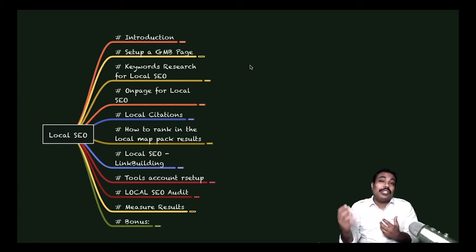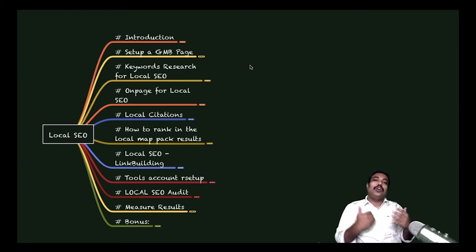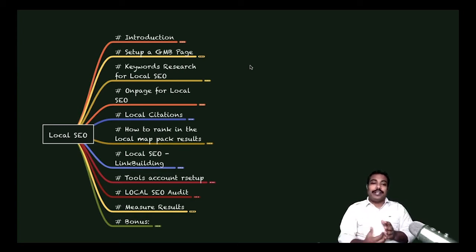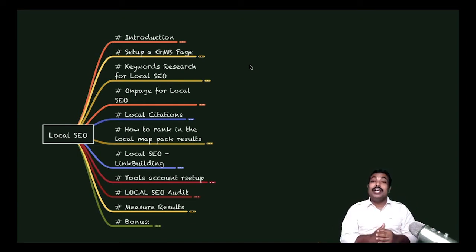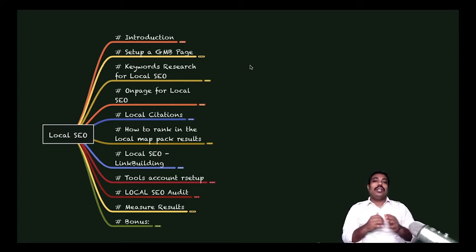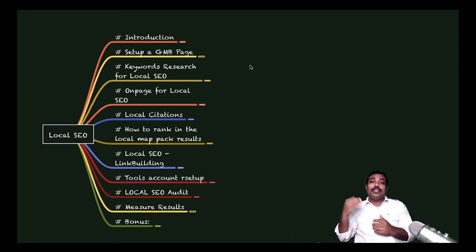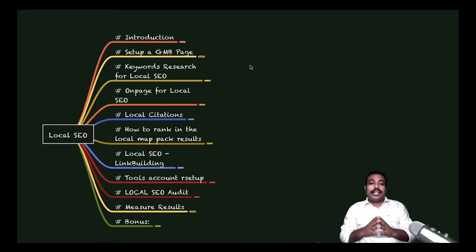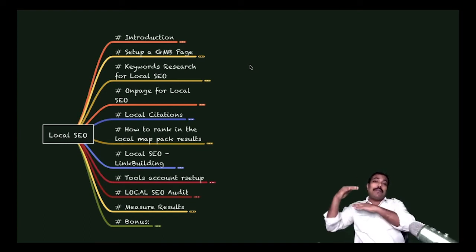Then how to do keyword research for local SEO — normally keyword research is a general pattern, but local SEO focuses especially on keyword research for local businesses. Then local citations. After that, how to rank in the local map pack — there are two types: local keyword search and the local map pack, which shows a map with 3 results. We will look into how to rank in the top three positions on local search SERP.